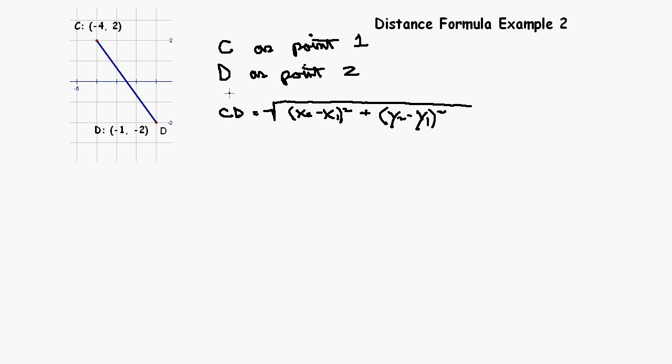C has the coordinates negative 4 comma 2, so that's going to be our x1 and y1. D has the coordinates of negative 1, negative 2, so we're going to let that take the place of x2, y2.